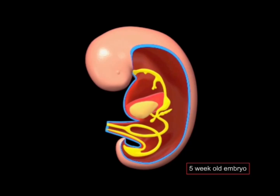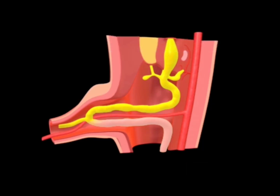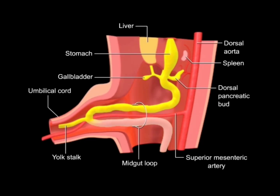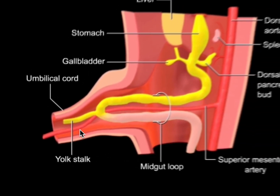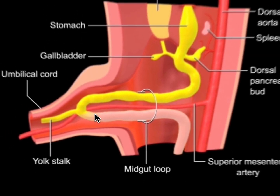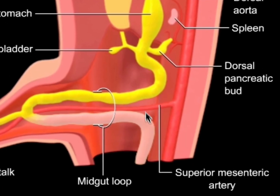The midgut gives rise to the small intestine including the duodenum distal to the opening of the bile duct — the major duodenal papilla — as well as the cecum, appendix, ascending colon, and proximal two-thirds of the transverse colon. By the start of week six, the C-shaped midgut elongates and protrudes into the proximal part of the umbilical cord — this is umbilical herniation. The vitelline duct connects the midgut to the umbilical vesicle and separates the cranial limb from the caudal limb of the midgut. The celiac trunk supplies the foregut and the superior mesenteric artery (SMA) supplies the midgut.